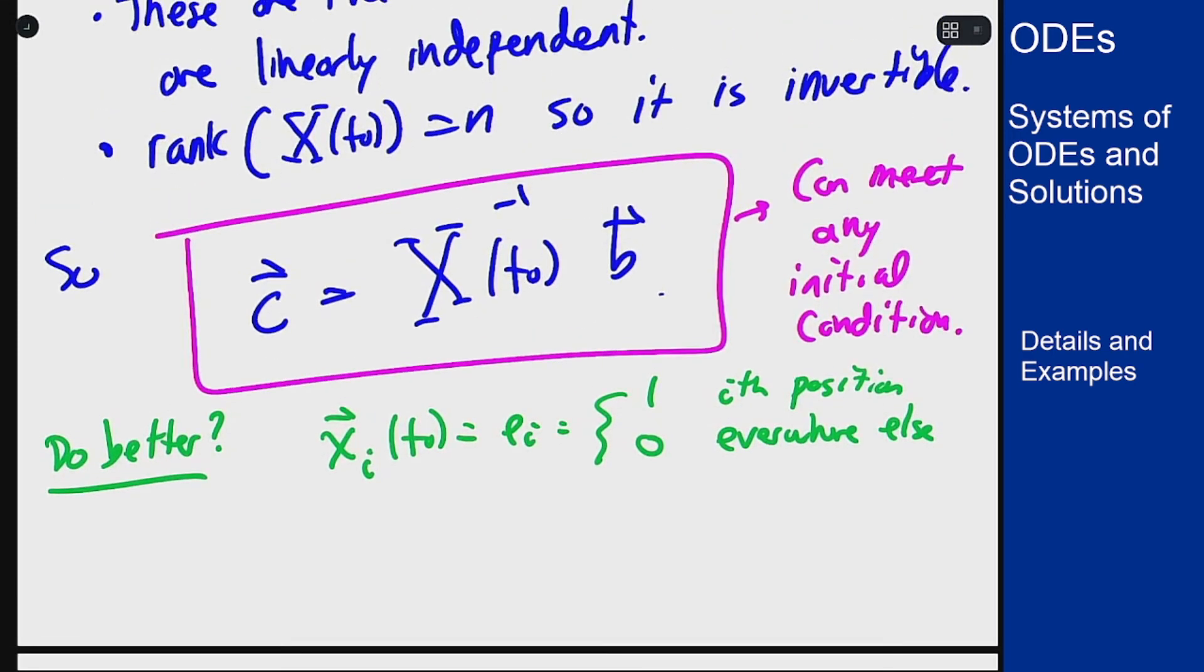Then this matrix X at t0 is just the identity matrix, because at that point I have 1s on the diagonal and 0s everywhere else. Which means the inverse is also the identity matrix.